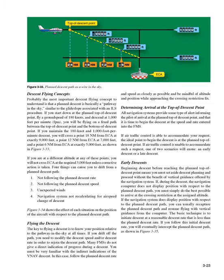Determining arrival at the top-of-descent point: all navigation systems provide some type of alert informing the pilot of arrival at the planned top-of-descent point, and that it is time to begin the descent at the speed and rate entered into the FMS. If air traffic control is able to accommodate your request, the ideal point to begin the descent is at the planned top-of-descent point. If air traffic control is unable to accommodate such a request, one of two scenarios will ensue: an early descent or a late descent. If the navigation system does display position with respect to the planned descent path, you can usually recapture the planned descent path and resume flying with vertical guidance from the computer. The basic technique is to initiate descent at a reasonable descent rate that is less than the planned descent rate — you will eventually intercept the planned descent path.